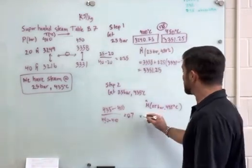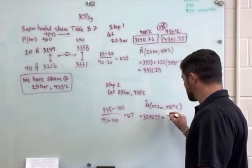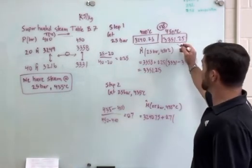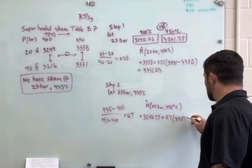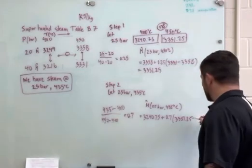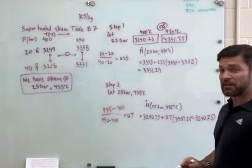So I need to find the value that is this plus 70% of this difference. Or in other words, it's 3240.75 plus 0.7 times the difference going from the higher to the lower is 3351.25 minus 3240.75.